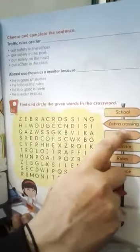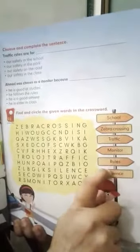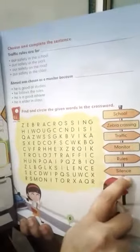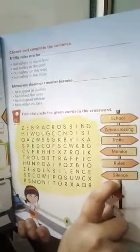Here are crosswords and this puzzle is made. From inside this, you have to find these crosswords. Okay, the first word is school, second word is zebra crossing, third is traffic, monitor, rules, and silence.